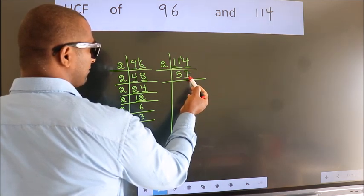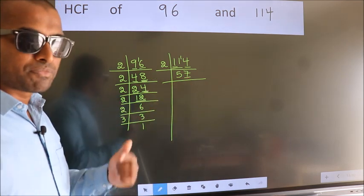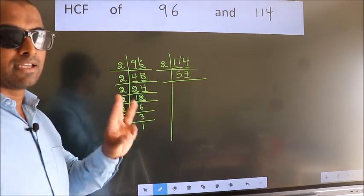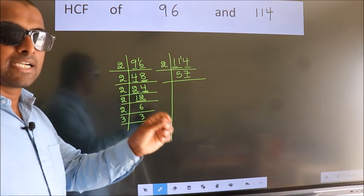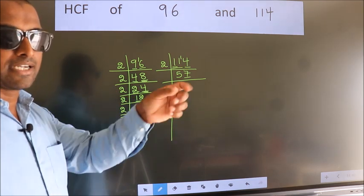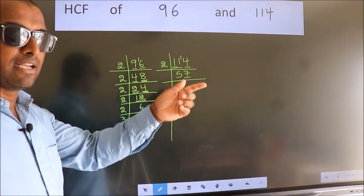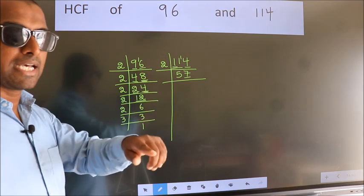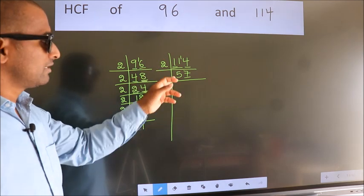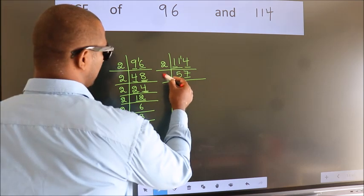Last digit 7, not even, so this number is not divisible by 2. Next prime number 3. To check divisibility by 3, for that, we should add the digits. 5 plus 7, we get 12. Is 12 divisible by 3? Yes. So this number also divisible by 3. So take 3.